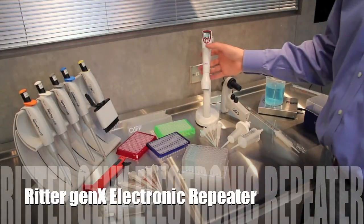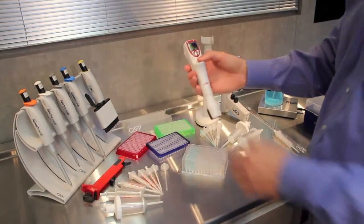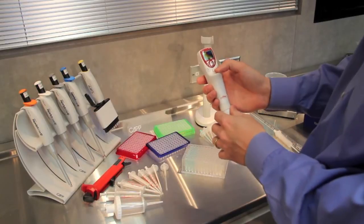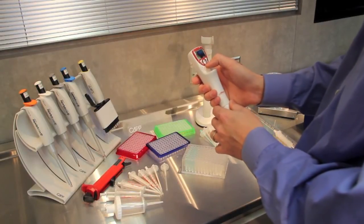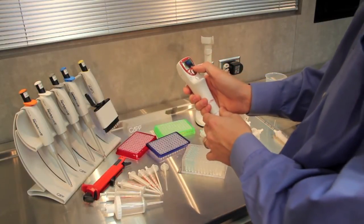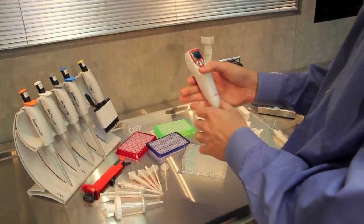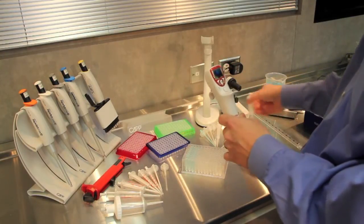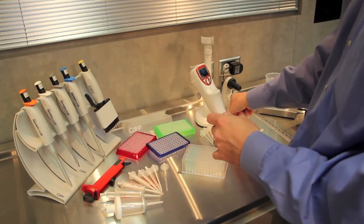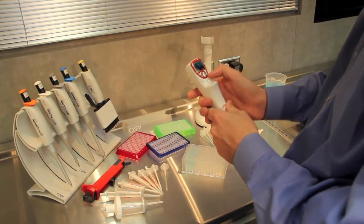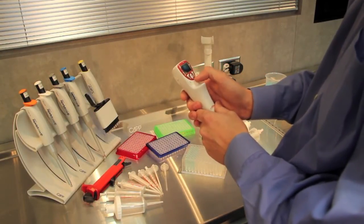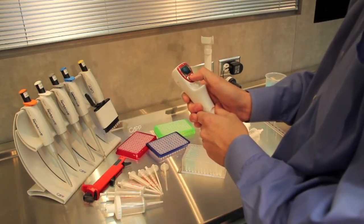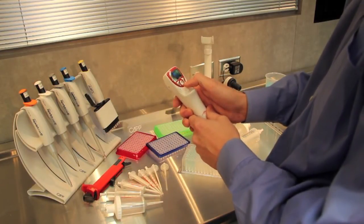The next option we have is the Ritter electronic repeater. With this one we have the flexibility of programming in nearly any volume that we want. It has a 100-step stepper motor in it, so you can take any one of the syringes and you can dispense one one-hundredth of whatever that volume is in each step. With this one we will select the 10ml syringe, we will select we want to do 1ml, and we're going to do it eight times.